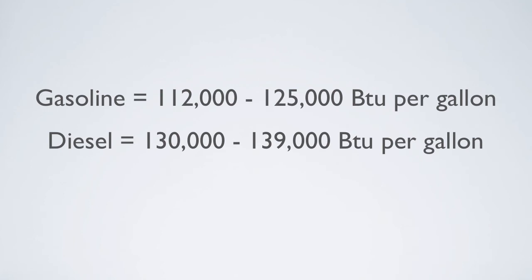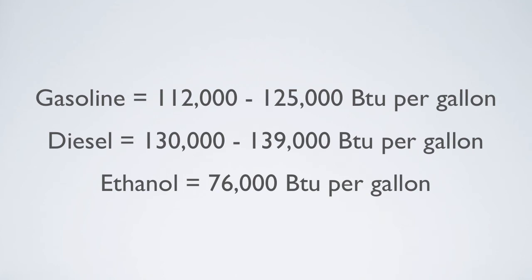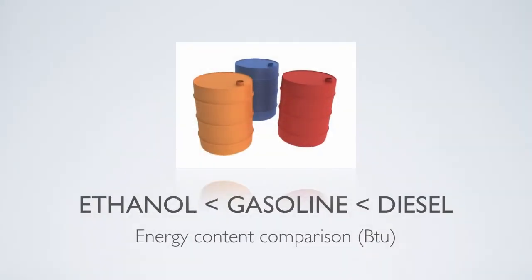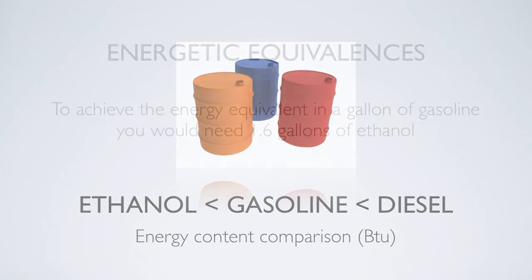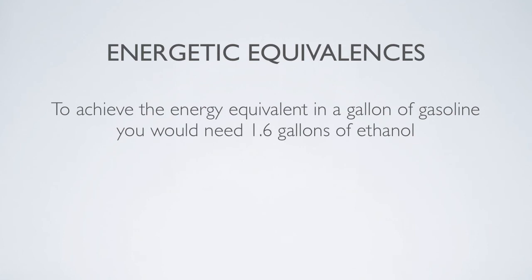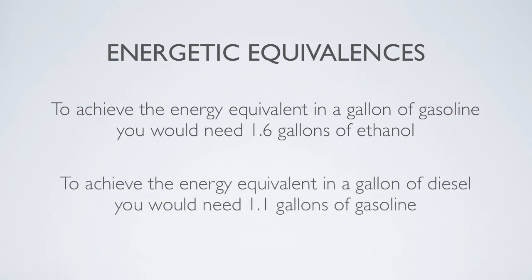For comparison, a gallon of ethanol contains approximately 76,000 BTU of energy. The practical matter of this is that a given volume — a gas tank, for example — filled with ethanol would contain less energy than the same volume filled with gasoline. Another way to look at it is that for each gallon of gasoline, you would need 1.6 gallons of ethanol to contain the energetic equivalent. It is equally appropriate to say that for each gallon of diesel, you would need 1.1 gallons of gasoline to contain the energetic equivalent.